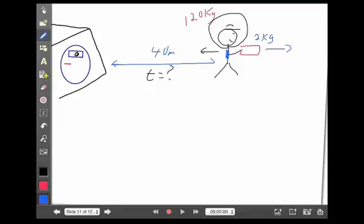Applying conservation of momentum, M1V1O plus M2V2O equals M1V1F plus M2V2F. You and the toolbox are sitting there at rest. So before the point of interaction, before you threw the toolbox, everything was at rest.